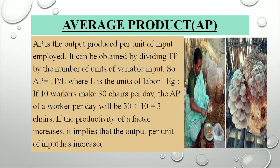Average product (AP) is the output produced per unit of input employed. It can be obtained by dividing TP by the number of units of variable inputs. For example, if 10 workers are making 30 chairs per day, the AP per worker per day is 30 divided by 10, which equals 3 chairs per labor. This shows that each laborer is producing 3 chairs, and by putting values into the formula we can compute the value of average product.